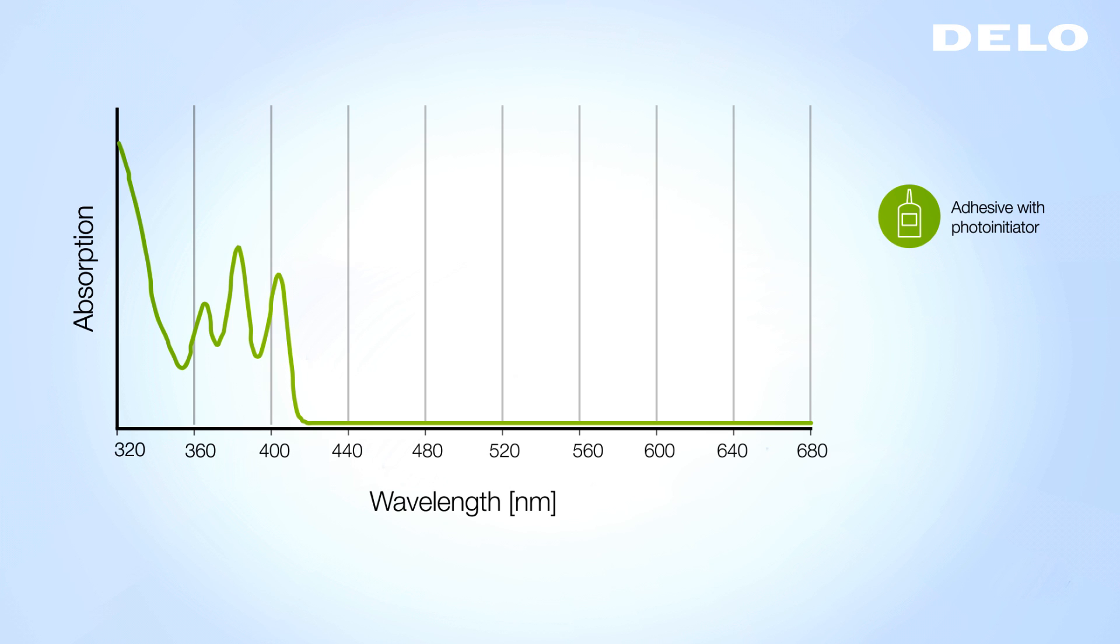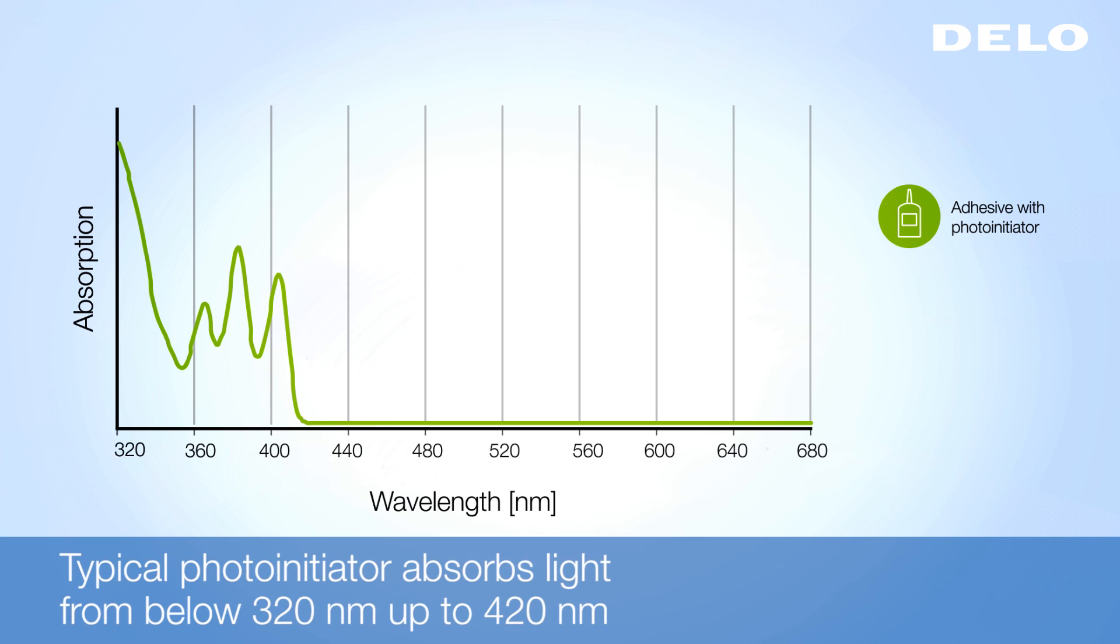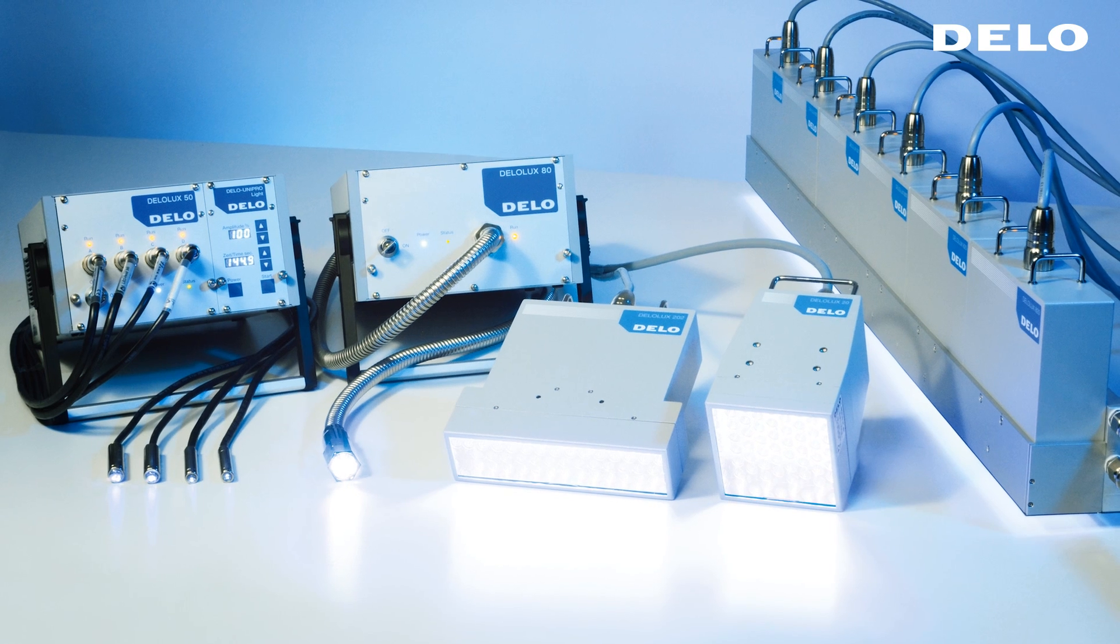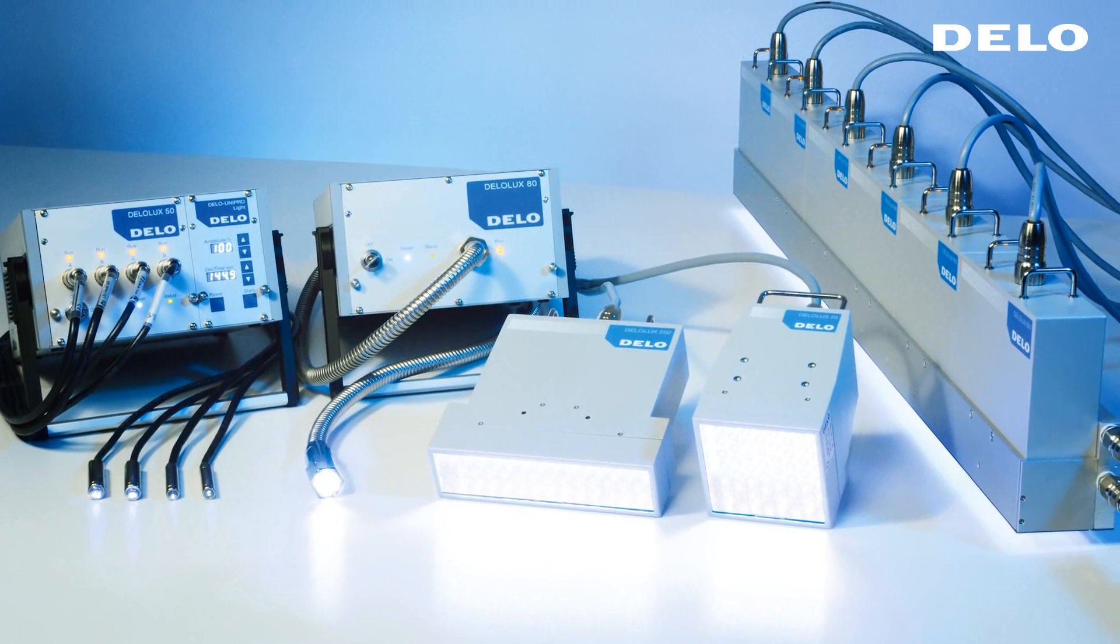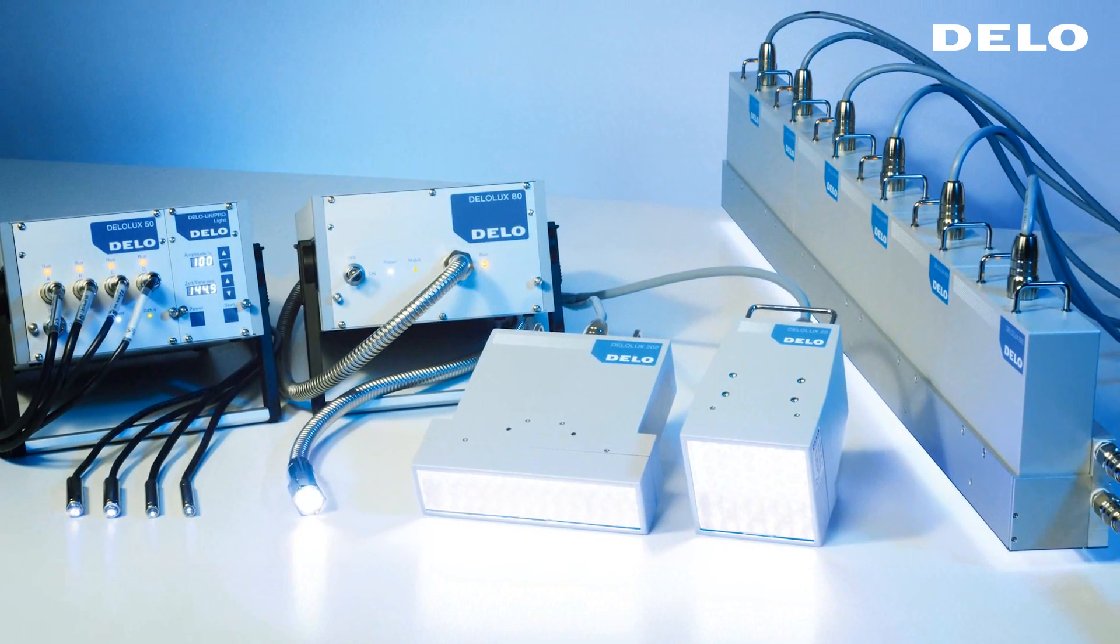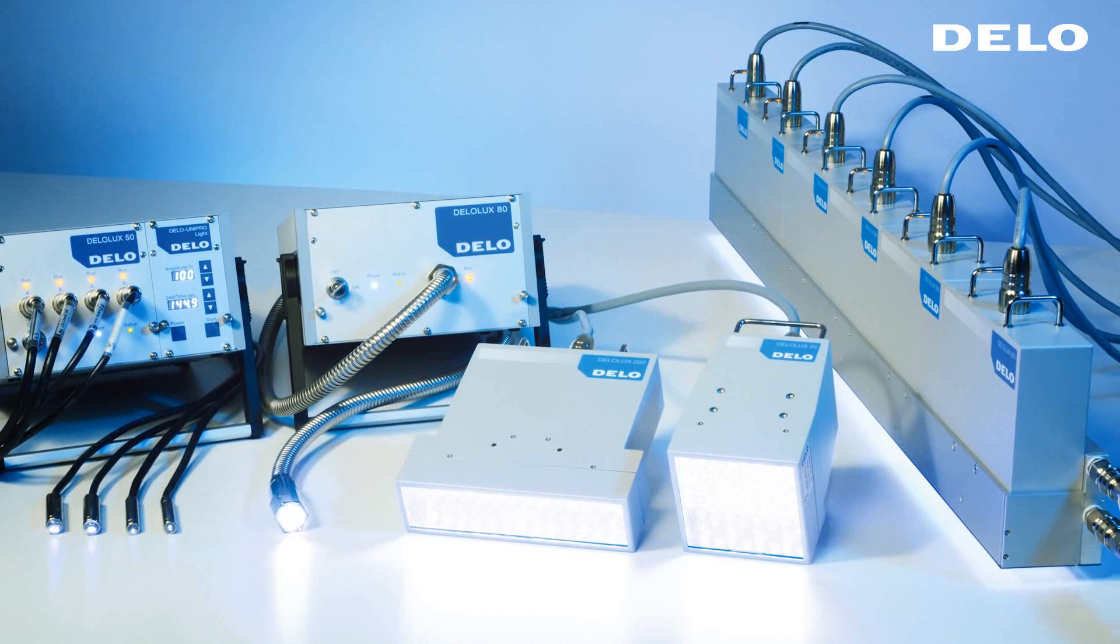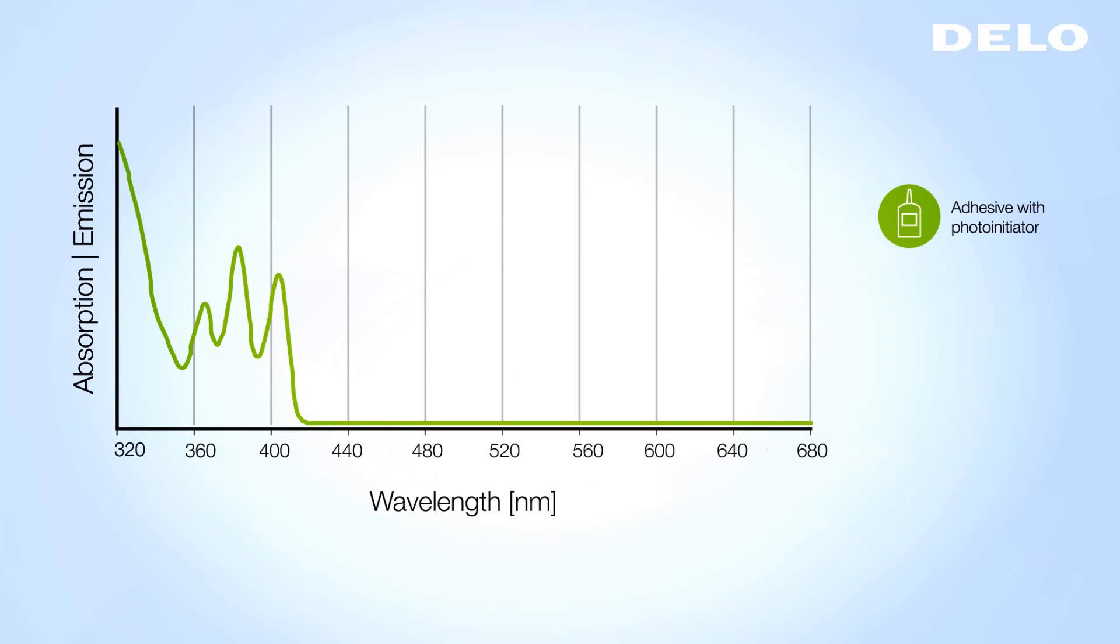For example, a typical photo initiator absorbs light from below 320 nm until 420 nm. Our high intensity LED lamps provide exactly this light of the specific wavelength and intensity. The irradiated wavelength matches the absorption of the photo initiator.